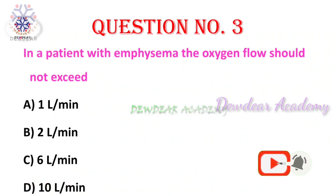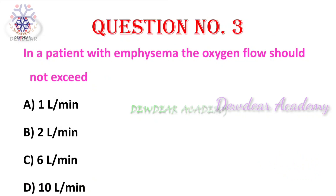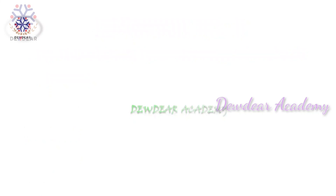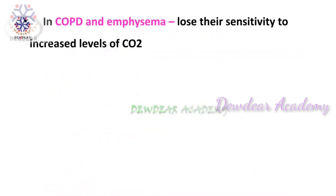Question 3: in a patient with emphysema, the oxygen flow should not exceed — options: 1 liter per minute, 2 liters per minute, 6 liters per minute, 10 liters per minute. The right answer is 2 liters per minute.